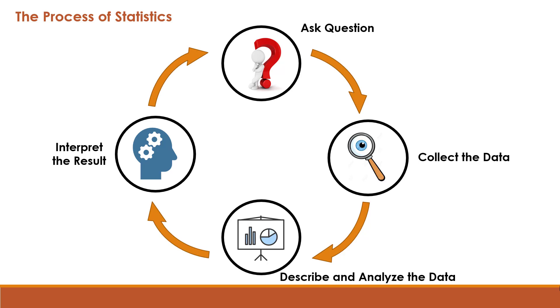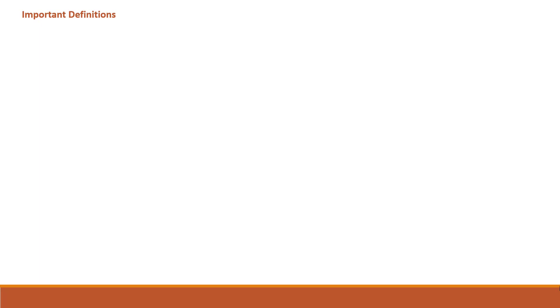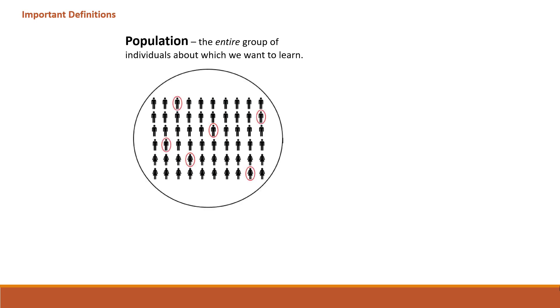Now, as we get some idea about the process of statistics, let's learn basic but very important definitions. And the first definition is population. Population is the entire group of individuals about which we want to learn. And when we collect data about all members of the population, this kind of study is called census.